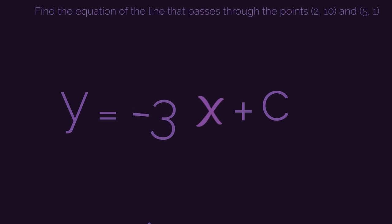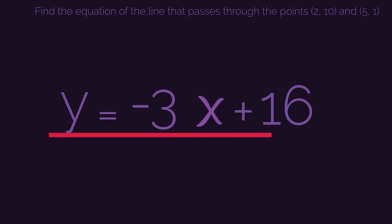So the gradient m was negative 3 and the y-intercept c is 16, which means the equation of the line is y equals negative 3x plus 16. So that is all there is for finding the equation of a straight line through two points.